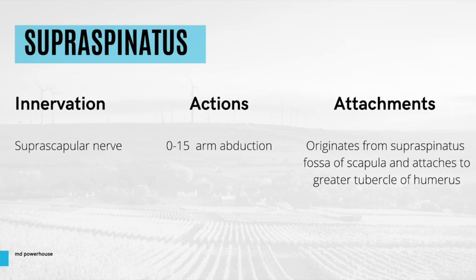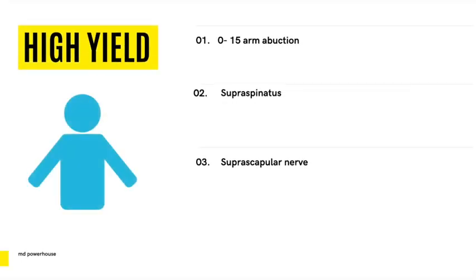Let's take a closer look at arm abduction because examiners love to test this concept. For the first 15 degrees of arm abduction, this is completed by the supraspinatus, which is innervated by the suprascapular nerve. The image here shows the first 15 degrees of arm abduction — that is, movement away from the body.